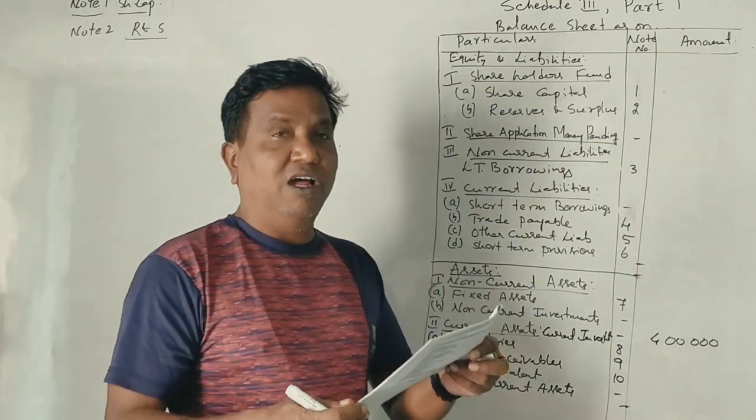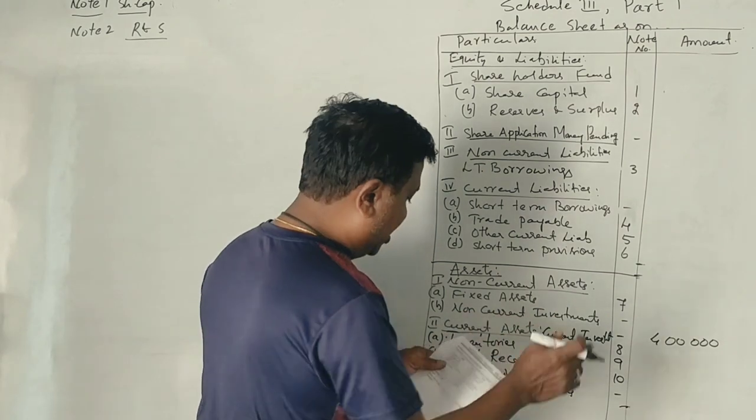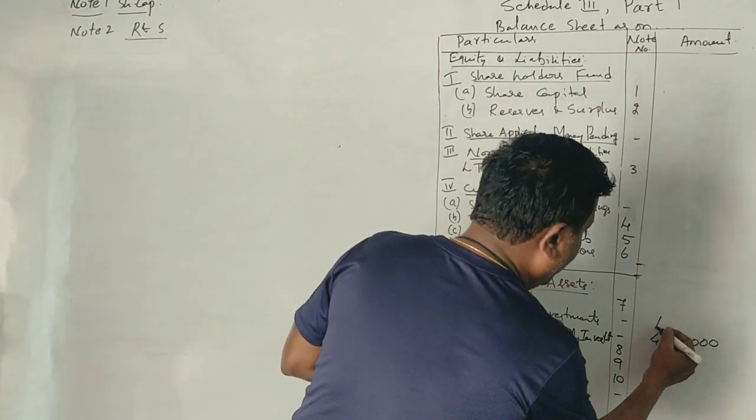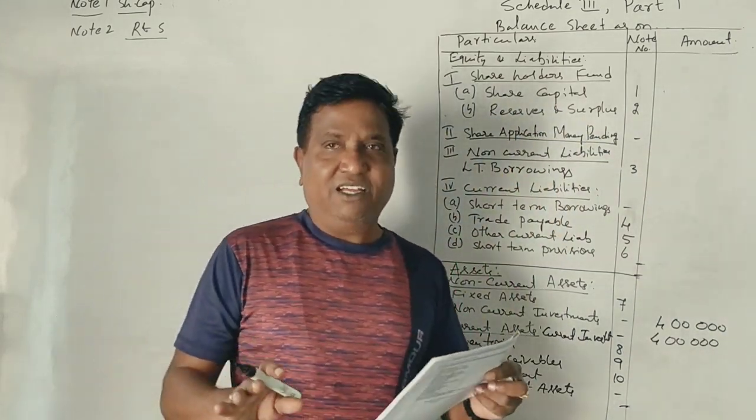Next, other non-current investment. Non-current investment note 8. That is also 4 lakhs. Performer. That is the next question.